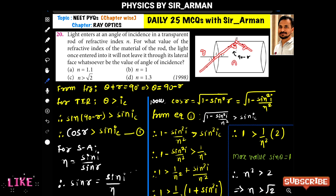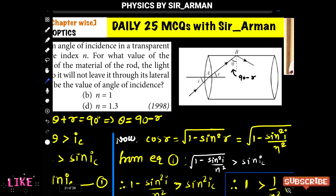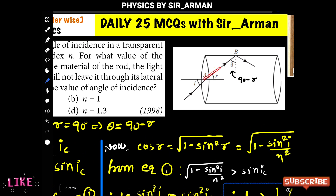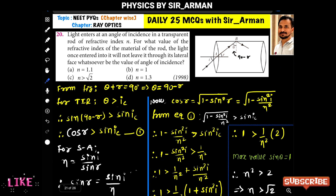We have to find the refractive index of this inside material. From the figure we can directly conclude: if it is incident here at a critical angle theta, it will reflect back. Now if we complete this triangle — if this angle is r and this angle is theta, and this angle is 90 — then theta can be written as 90 minus r.